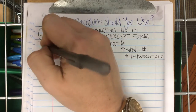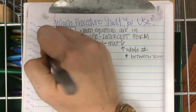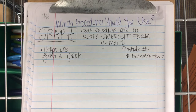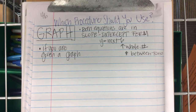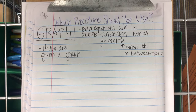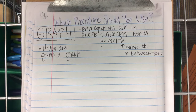Here's another obvious situation: if you are given a graph, you should graph it. If you're not given a graph, that means you have to create your own — and you probably don't want to do that. There's one more situation where you have to graph it — it's the first thing we learned about when we did systems. It cannot be substituted and it cannot be eliminated. There's one scenario where it has to be graphed because the graph is your answer.